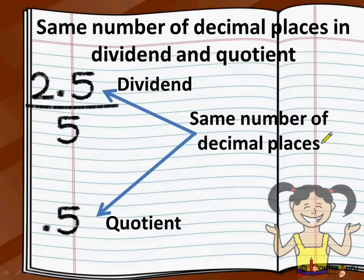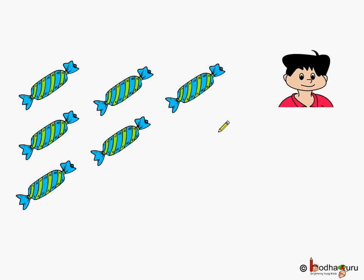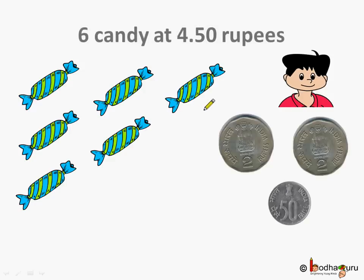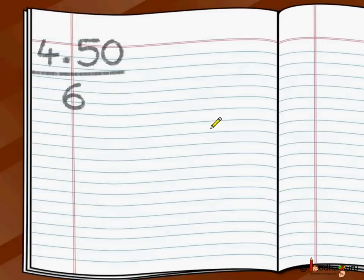Let's take another example. Aman bought 6 candies for 4.50 rupees. So what is the cost of each candy? We are going to do 4.50 divided by 6.